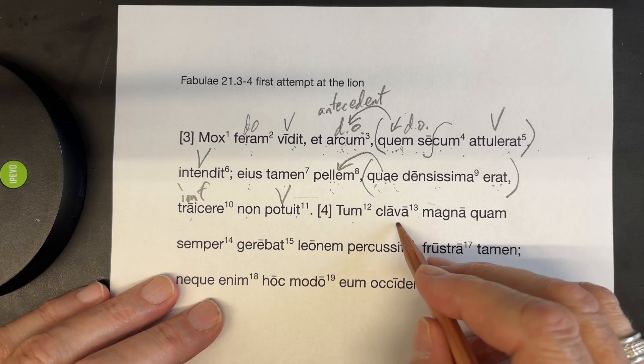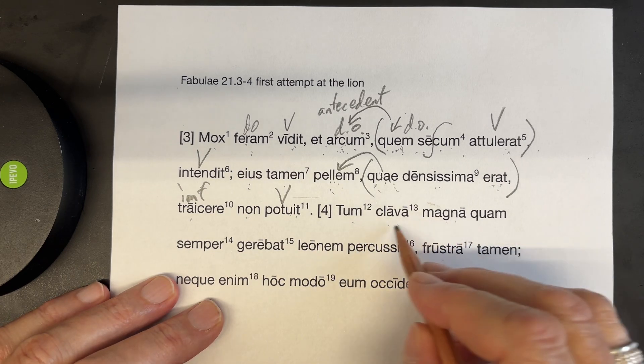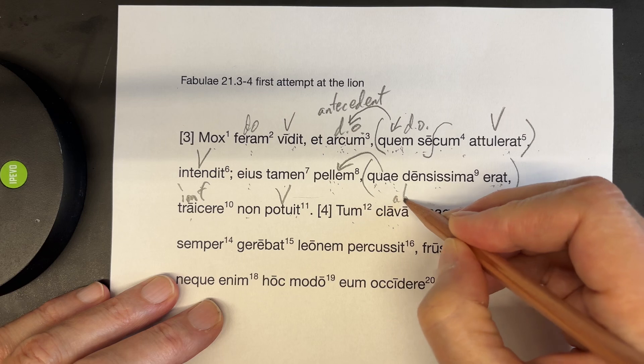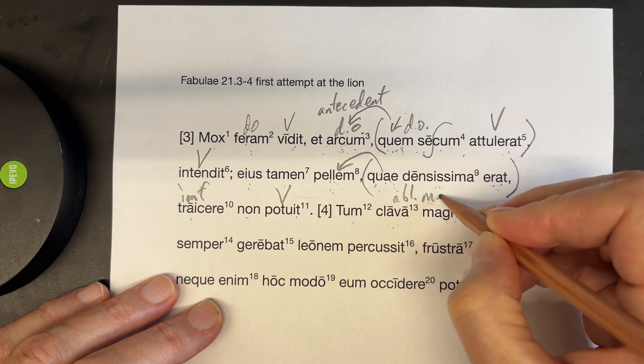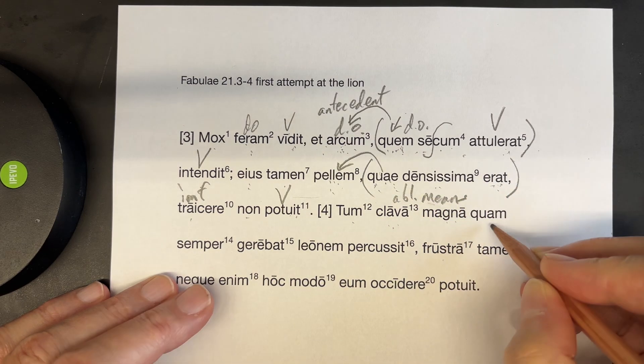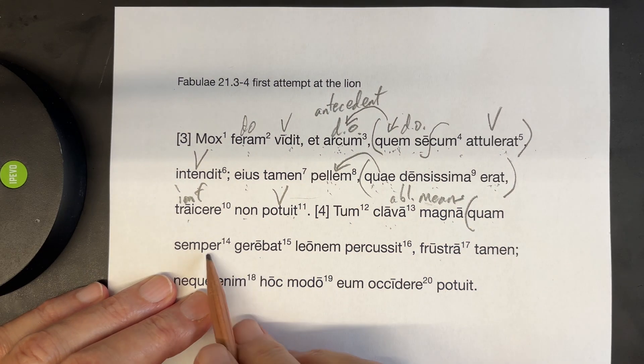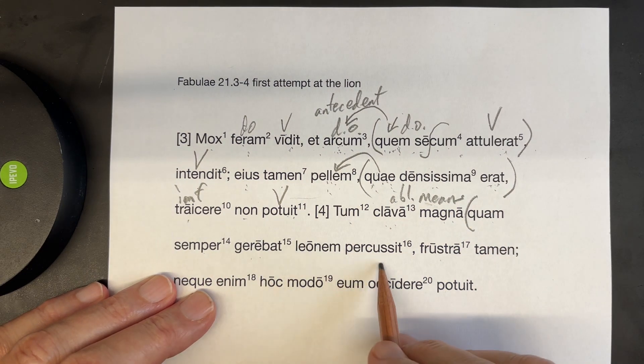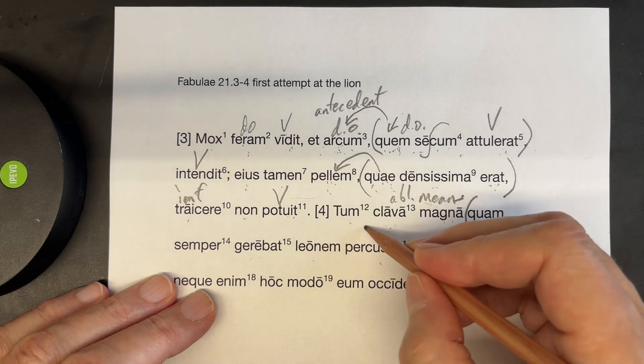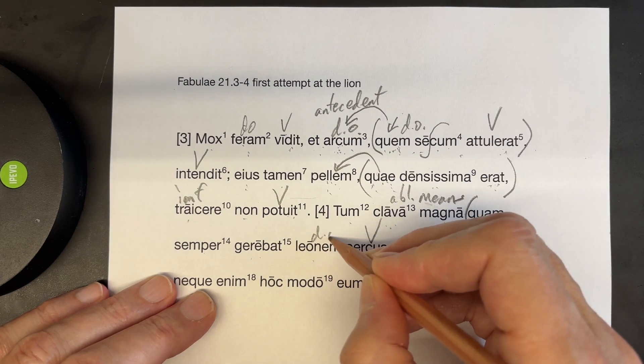All right. And then, clava magna, with a great club, ablative of means, which, relative clause again. He always brought with him, percussit leonum, he struck a lion.